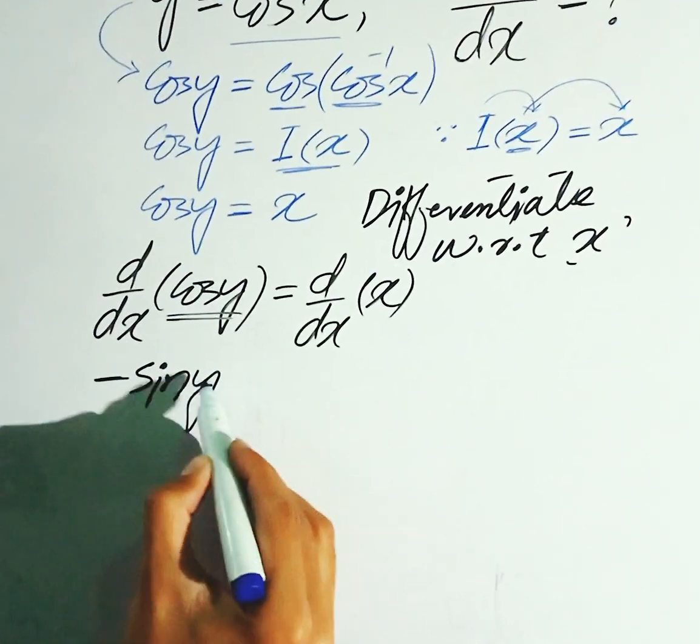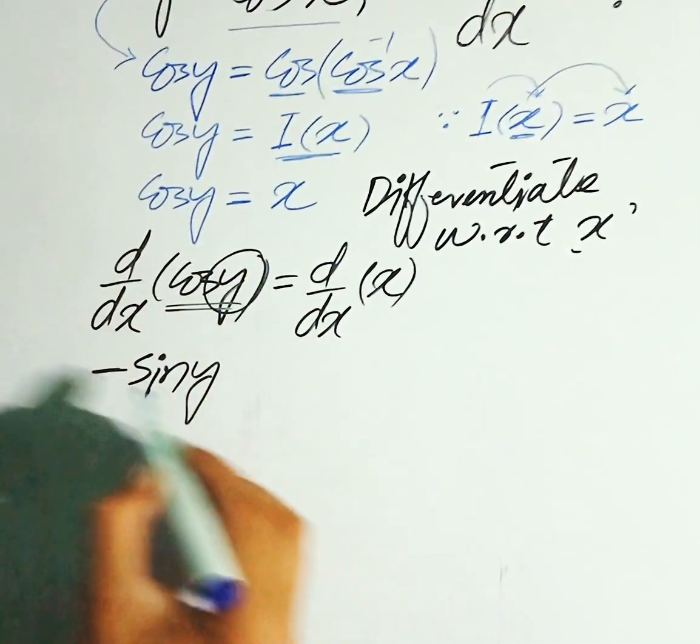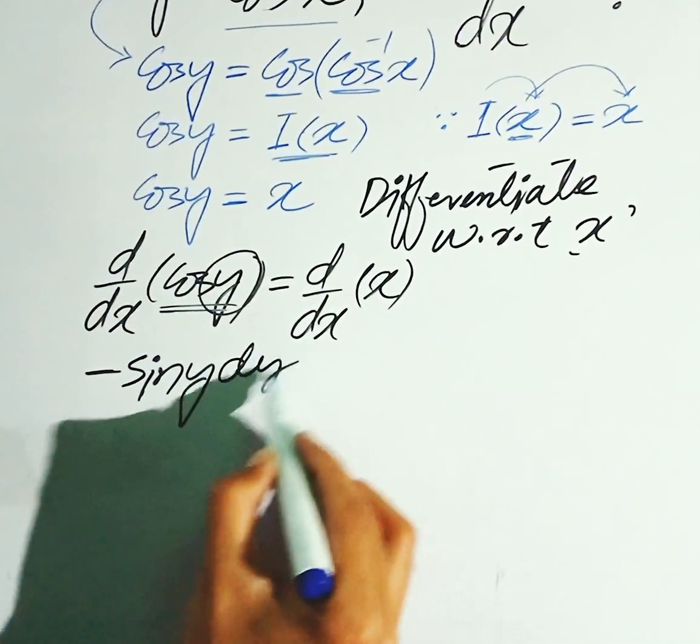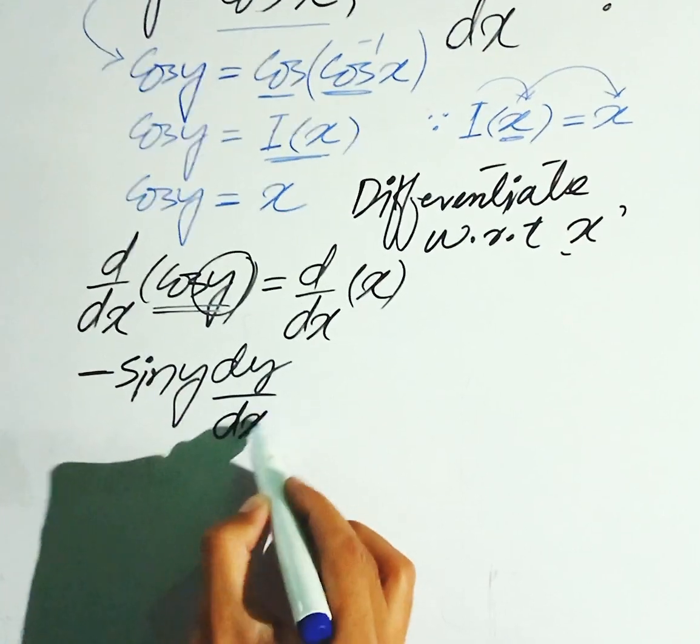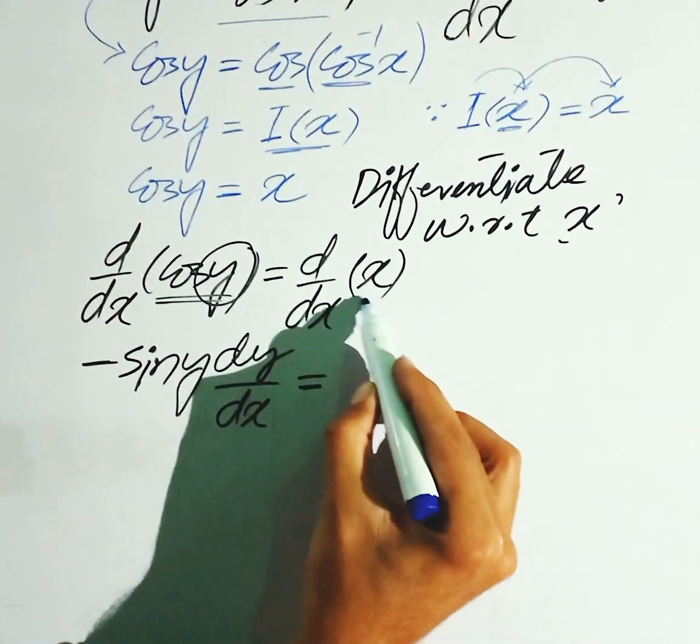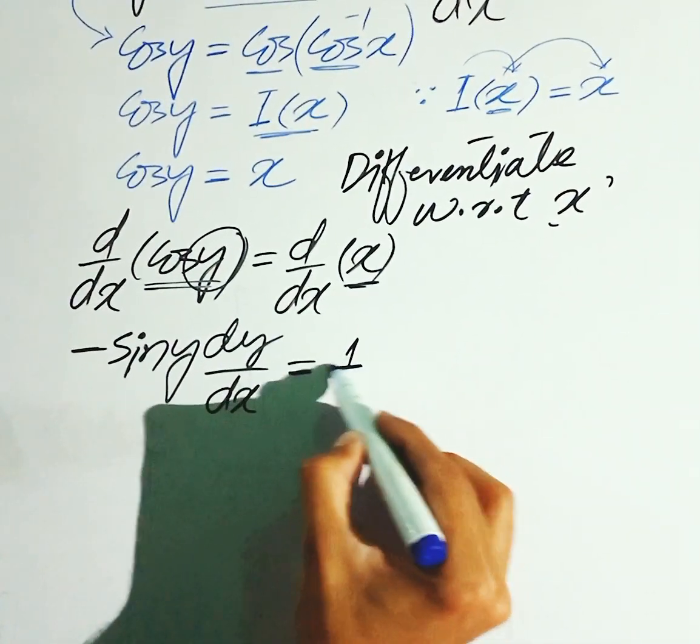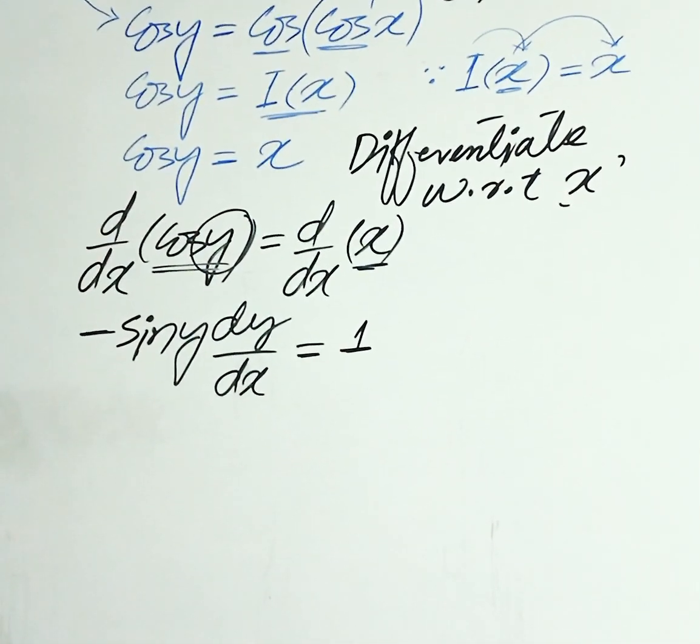Minus sin y, again argument ka derivative, which is dy over dx is equal to x ka derivative 1 aata hai. So we get 1.